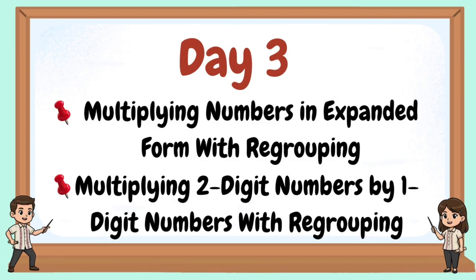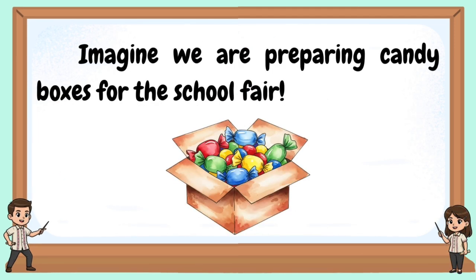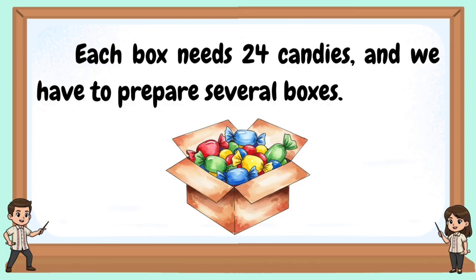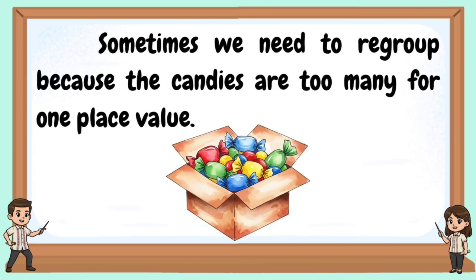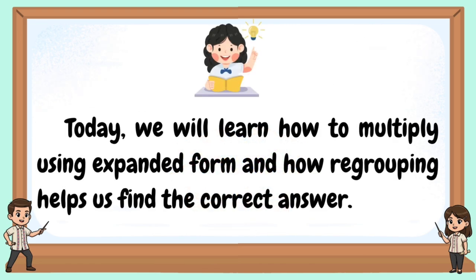Welcome to our day 3: Multiplying numbers in expanded form with regrouping. Multiplying two-digit numbers by one-digit numbers with regrouping. Imagine we are preparing candy boxes for the school fair. Each box needs 24 candies and we have to prepare several boxes. Sometimes we need to regroup because the candies are too many for one place value.